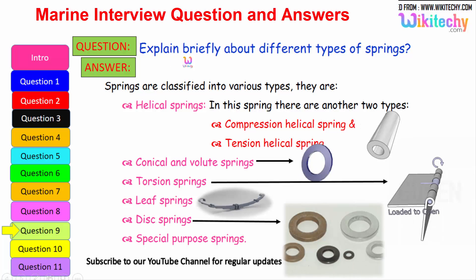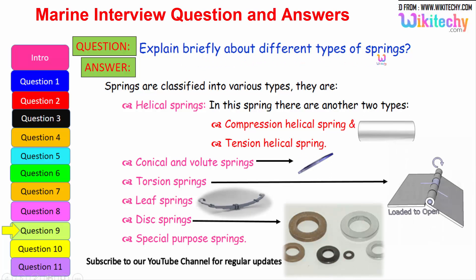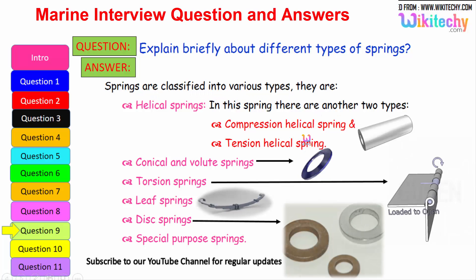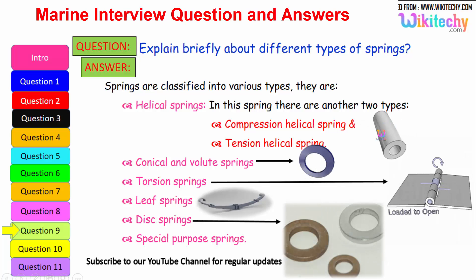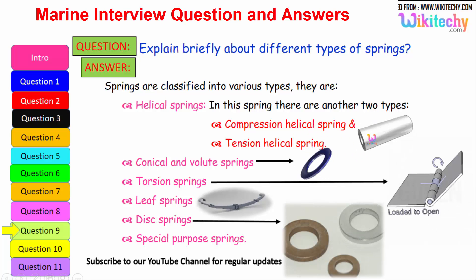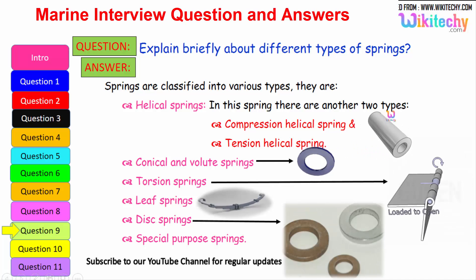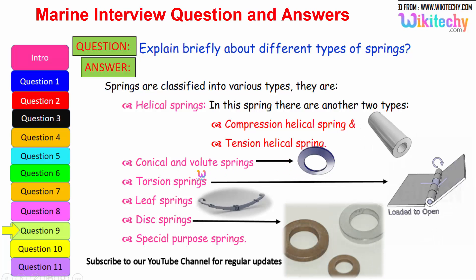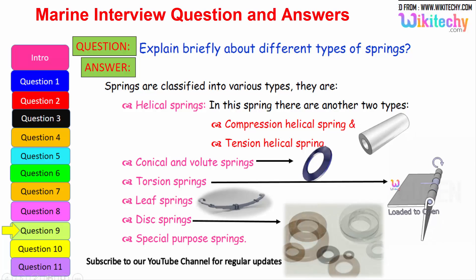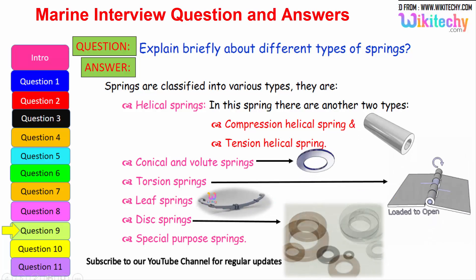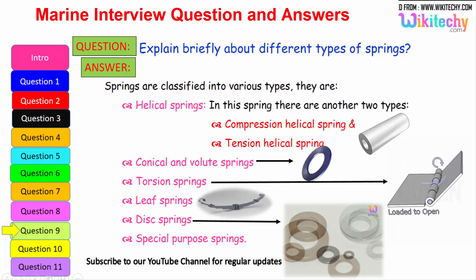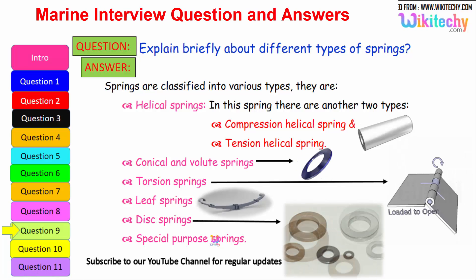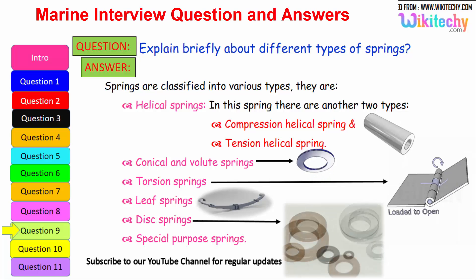Let us see briefly about the different types of springs. Springs are classified into various types: the first is helical springs, which are further divided into compression helical springs and tension helical springs. The next is conical volume springs. Then torsion springs, leaf springs, and disc springs. There are also additional special purpose springs. These are the different types of springs available.